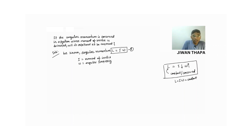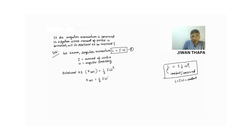Now, rotational kinetic energy — let us denote it by the symbol K_rot. This equals half I omega squared. So rotational kinetic energy equals half I omega squared. Let us call it equation 2.